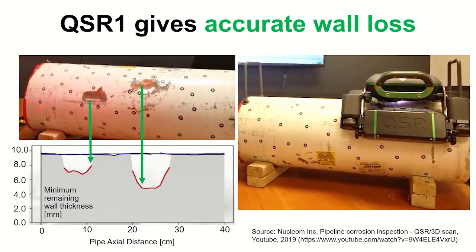GUL scanning using the QS-R1 has been independently shown to measure wall loss accurately, which gives the highest probability of detecting corrosion under pipe supports.